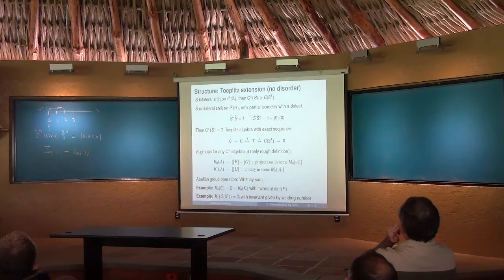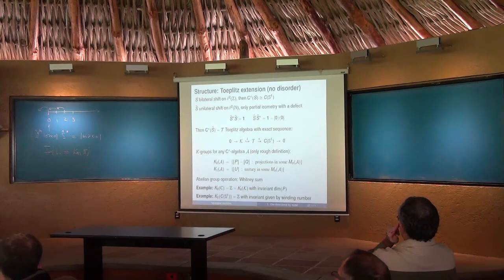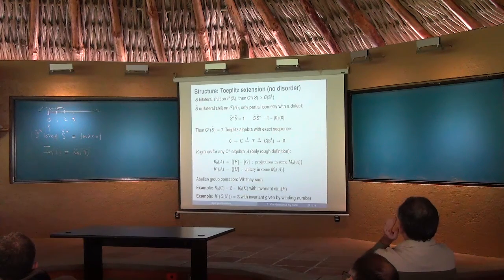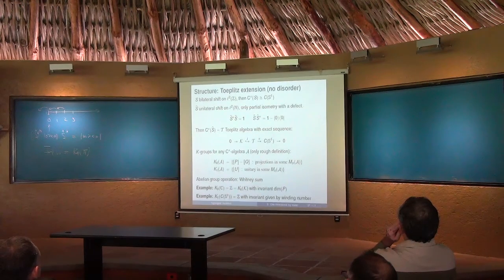Let's give an example of K1. The algebra of continuous functions on the circle: a unitary means the function maps the circle into the circle, so it's invertible and has a winding number. Two functions with different winding numbers are really different — I can't deform them into one another. Therefore I have different classes of unitary operators in C(S¹), labeled by the winding number. These are the two main examples that we work with.